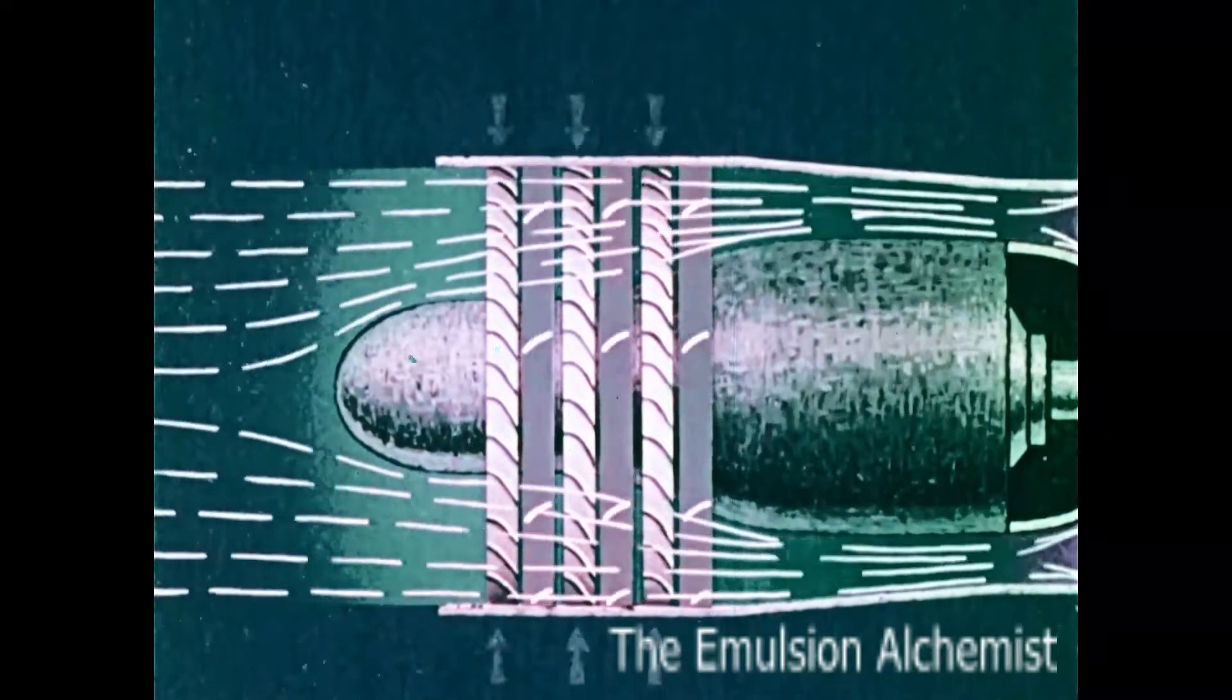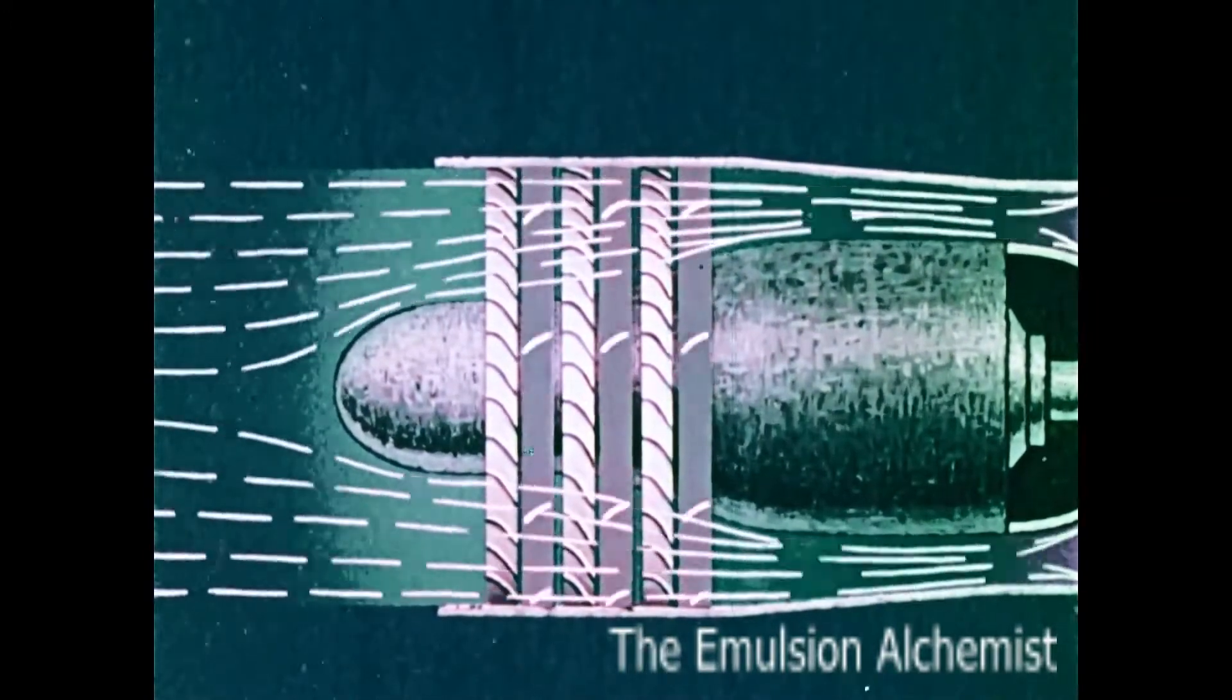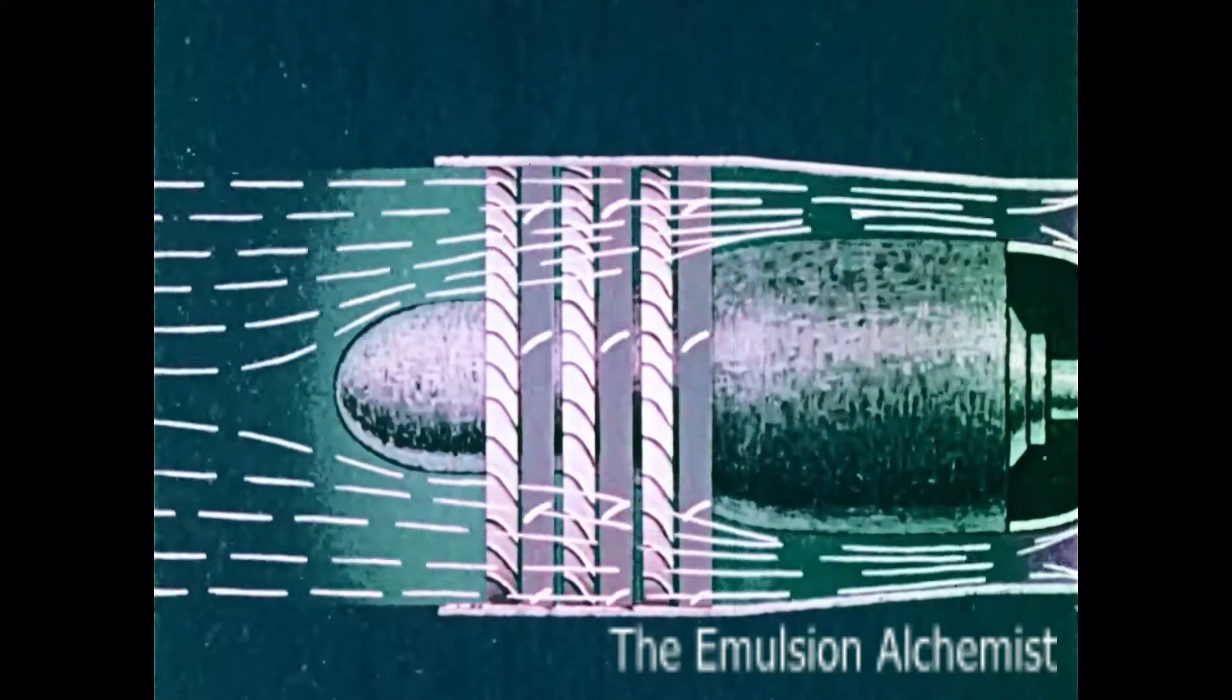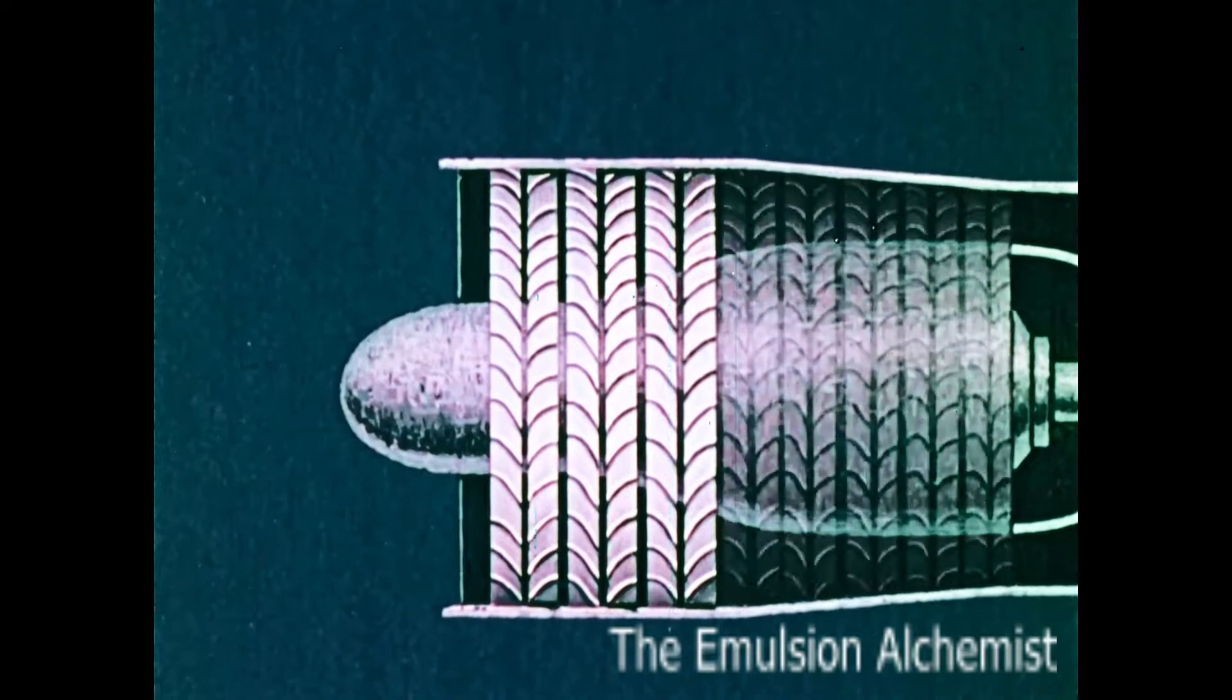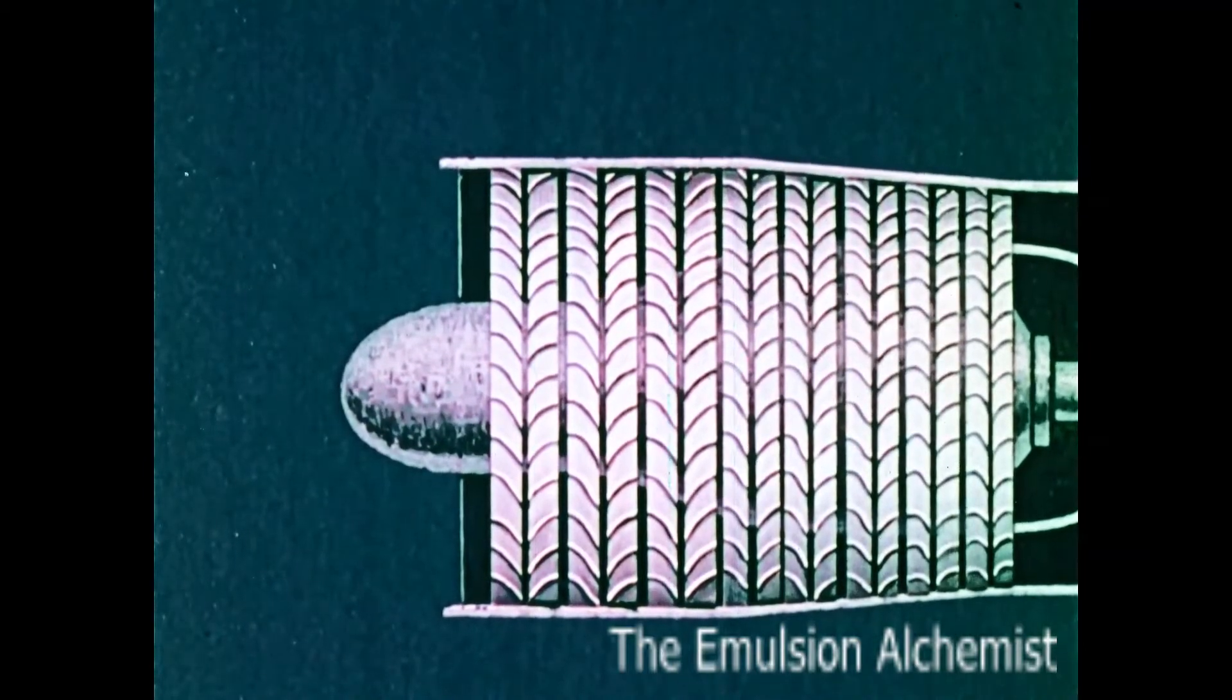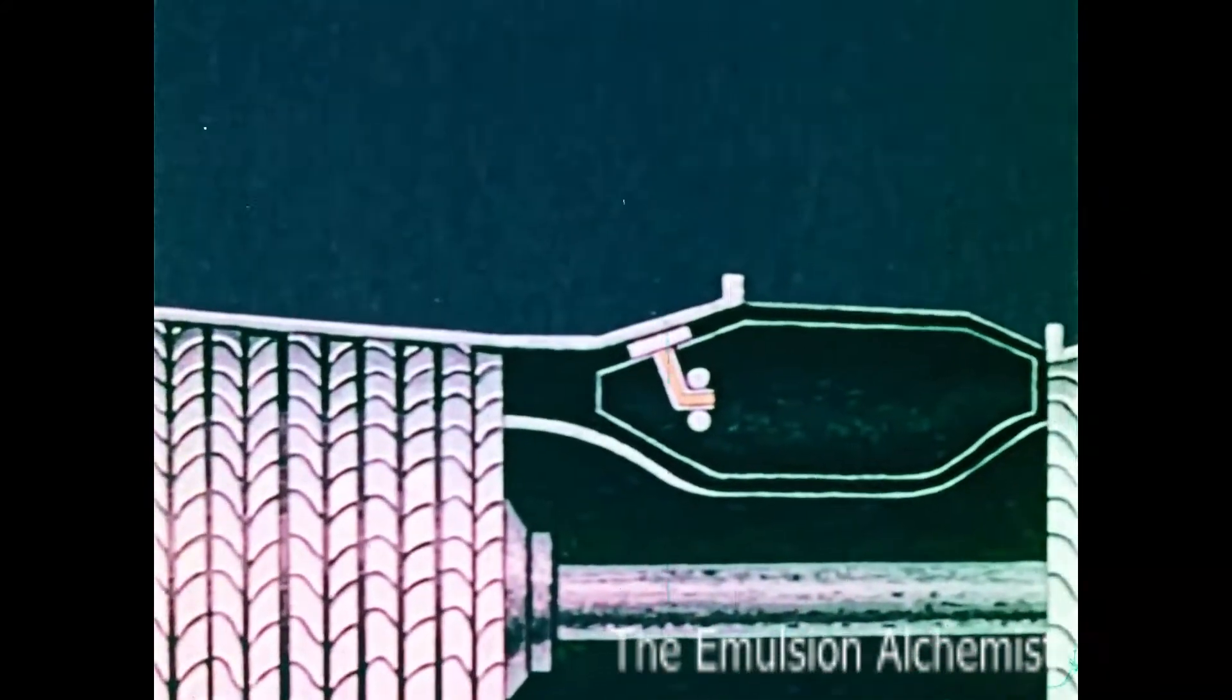The compressor also has stationary blades. They decrease the air's velocity, raising its pressure. Axial type compressors usually have several stages. They add more pressure to the air, which is then directed into the combustion chamber.